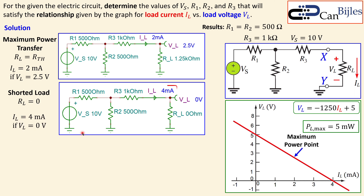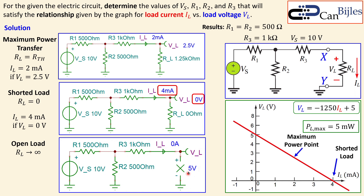This is the short-load condition confirmed. Now for the open-load condition — disconnecting the load entirely — the simulator shows zero amps but five volts across the two nodes. That matches exactly the other endpoint on the graph: zero load current but five volts load voltage. So we have verified both extreme values of the graph.